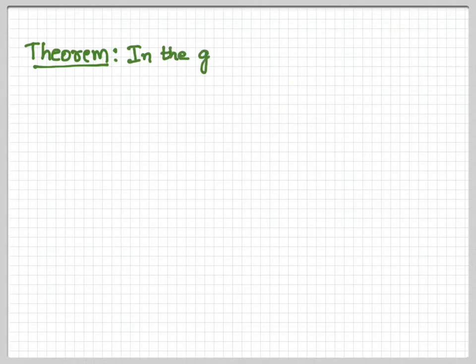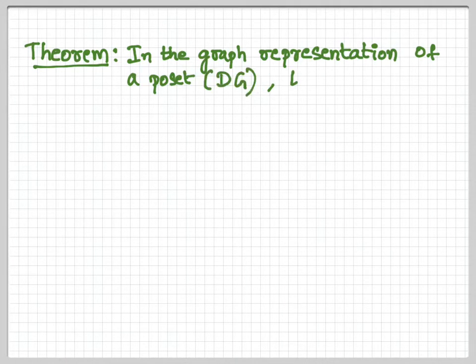Okay, so let's look at a theorem. In the graph representation of a PoSET—I'm sorry, it's a directed graph—there is always a source. Now what do I mean by this? Whenever you write a graph representation of a partially ordered set, there is always a node which is a source. What do you mean by a source? By source you mean a node with no incoming edges, only outgoing edges.